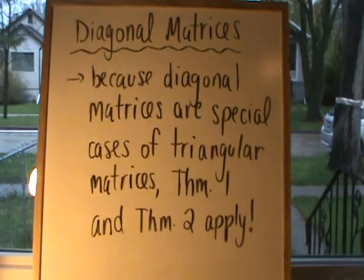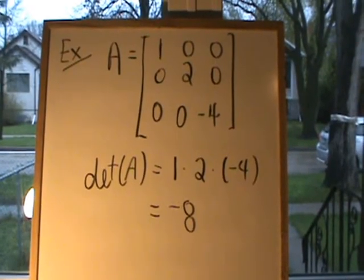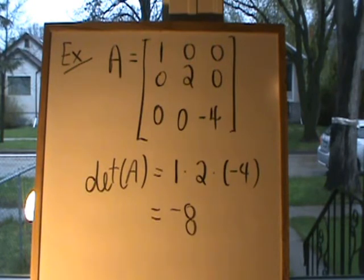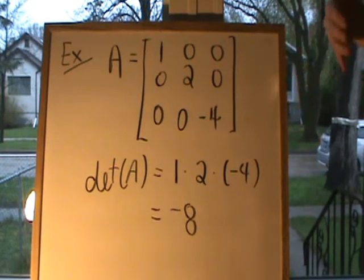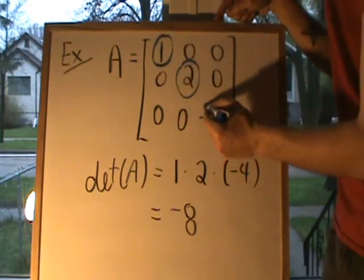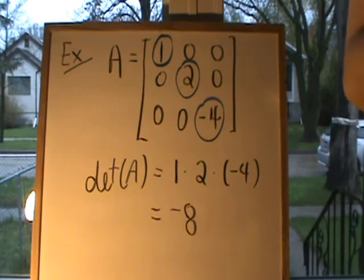Next, let's look at diagonal matrices. Because diagonal matrices are special cases of upper and lower triangular matrices, our theorems already apply. Theorem 1 says the determinant is just the product of the entries on the main diagonal. Since our diagonal matrix is both upper and lower triangular, we take the product of those main diagonal entries: 1 times 2 times minus 4, for a determinant of negative 8.